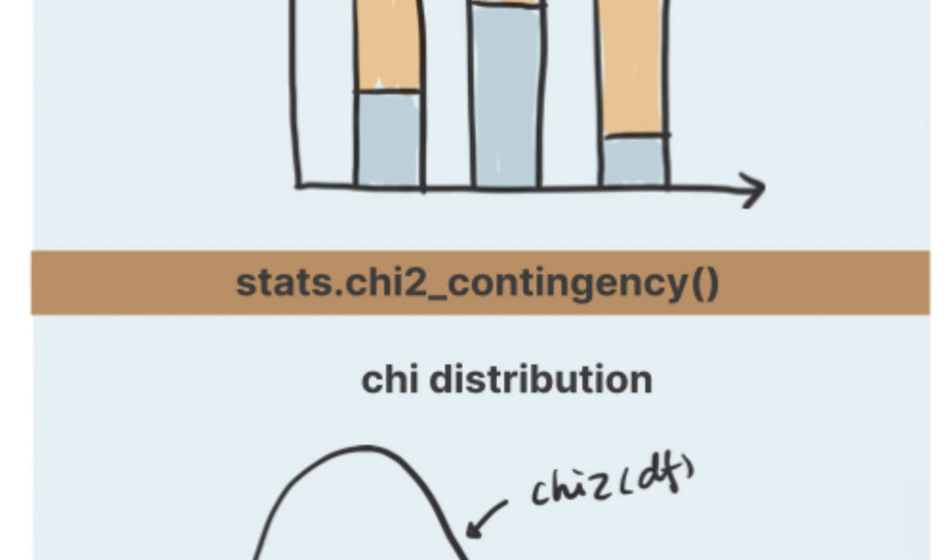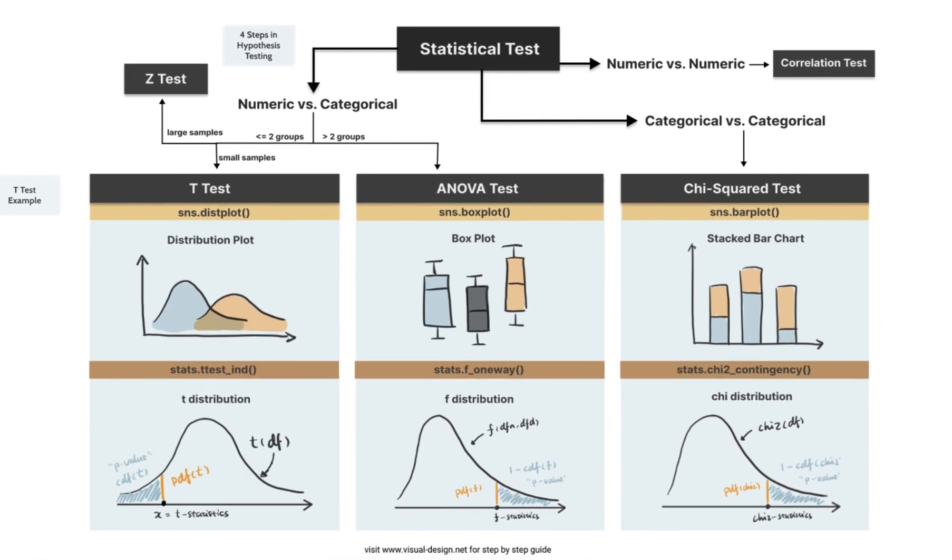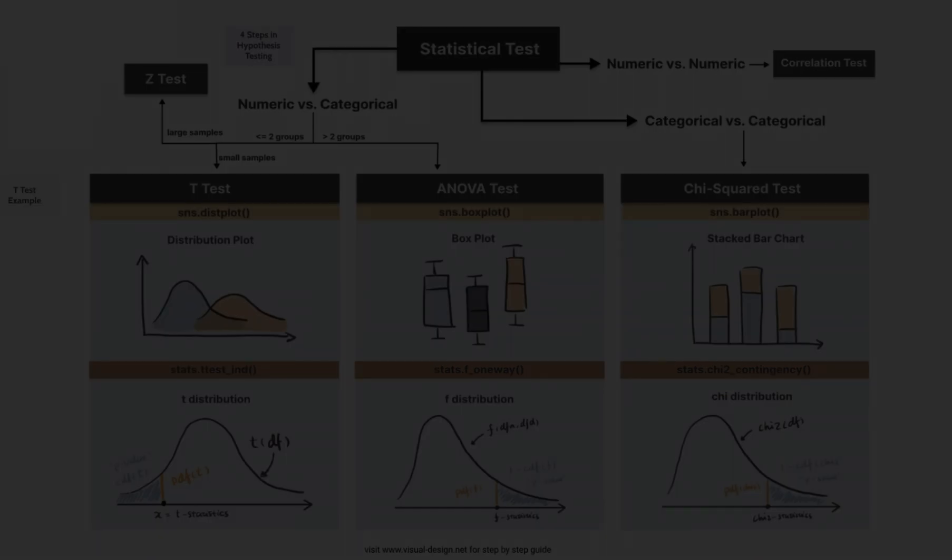Then to compare the p-value against 0.05, we can tell if there is evidence to reject the null hypothesis that two categorical variables are independent. Hope this video helps you to have a better understanding of three main types of statistical tests. Look forward to see you in the next one.